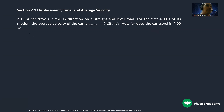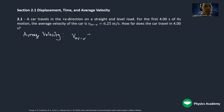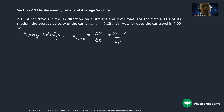Note that the average velocity along the x-direction is given by this formula: the average velocity along x equals the displacement over the time interval. This equals the final position minus the initial position, over the final time minus the initial time. This is the definition of average velocity — displacement divided by time interval.